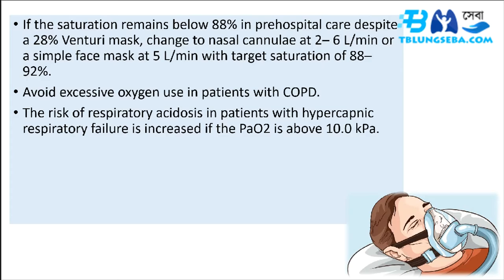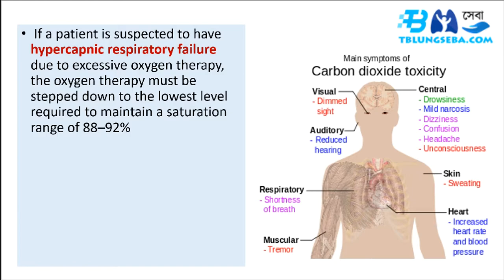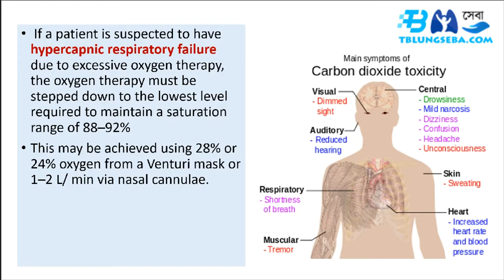If the patient is hypercapnic and acidotic, start NIV with targeted oxygen therapy if respiratory acidosis persists for more than 30 minutes after initiation of standard medical management. If hypercapnic respiratory failure is suspected due to excessive oxygen therapy, step down oxygen to the lowest level required to maintain 88 to 92% saturation — this may be achieved using 28% or 24% oxygen from a Venturi mask or 1 to 2 L/min via nasal cannulae.